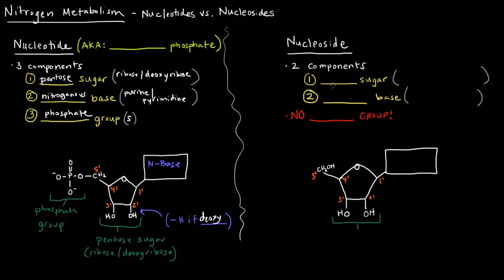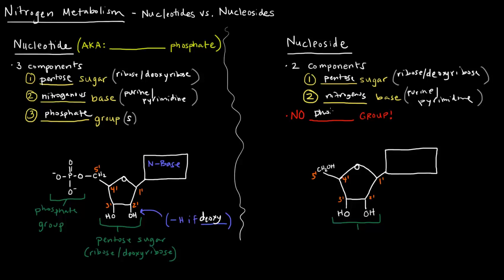What is a nucleoside in comparison? It's pretty similar. It has a pentose sugar, which can be ribose or deoxyribose, and it can have a nitrogenous base, which can be a purine or a pyrimidine. But there's no phosphate group — that's basically the difference.